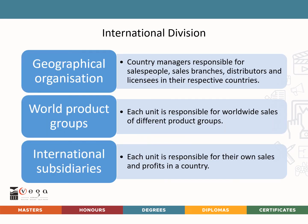International divisions are organized in various ways. The corporate staff consists of marketing, manufacturing, research, finance, planning, and personnel specialists. Operating units can be organized in one of three ways: geographical organizations with country managers responsible for salespeople, sales branches, distributors, and licensees; world product groups, each responsible for worldwide sales of a specific product; or international subsidiaries, each responsible for their own sales and profits in their respective country.